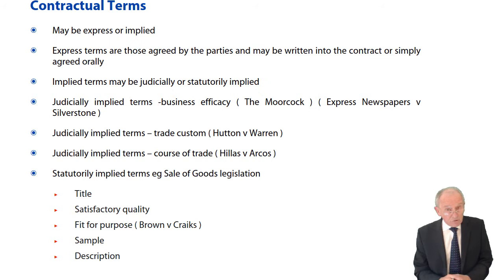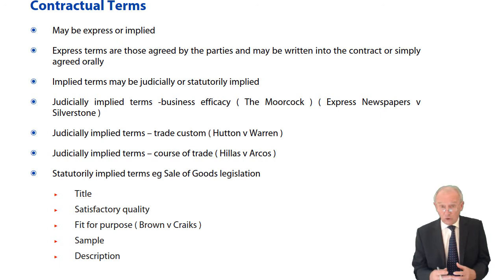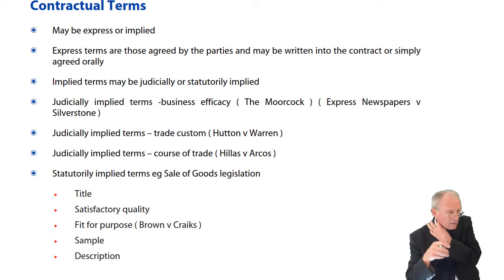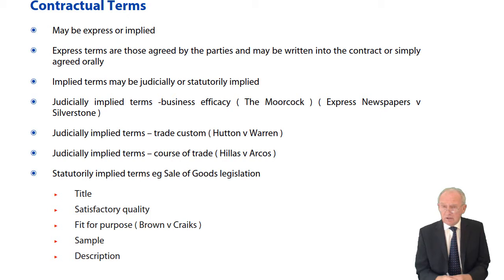Contractual terms may be expressed or implied. Express is where they are specifically addressed, either in writing or orally, although oral contracts are not recommended. Implied terms is where we don't actually mention them — terms that are not actually mentioned at all, that never crossed our minds to think about.